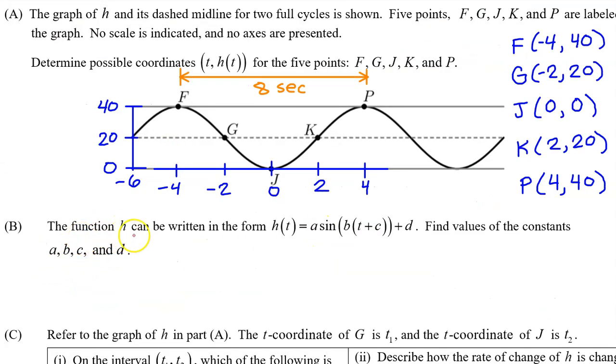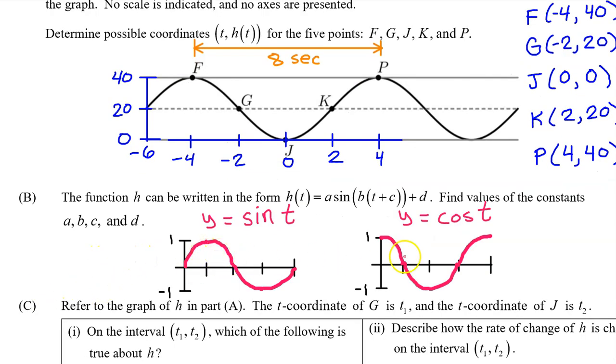Part B. The function h can be written in the form h of t equals a times the sine of b times t plus c plus d. Find the value of the constants a, b, c, and d. I want you to memorize what these parent functions look like. This is y equals sine t, and this is y equals cosine t. Notice that cosine t starts at its highest value, then it falls to its lowest value, and ends back at its highest value again. By contrast, notice that sine t starts at the midline, then it climbs to its highest value, falls to its lowest value, and ends back at the midline.